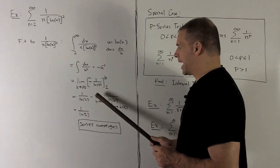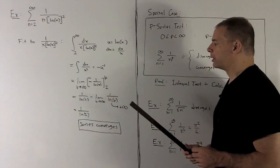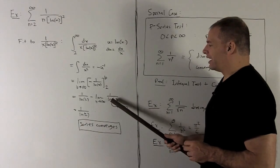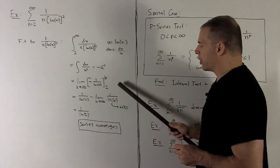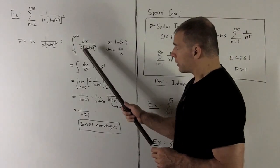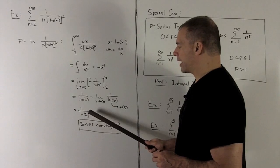Then, the b term is going to be minus limit, as b goes to infinity, of 1 over natural log of b. We saw earlier, as b goes out to infinity, natural log of b goes out to infinity also. So, this term right here is going to go down to 0. So, we're left with the improper integral is going to have value 1 over natural log of 2.